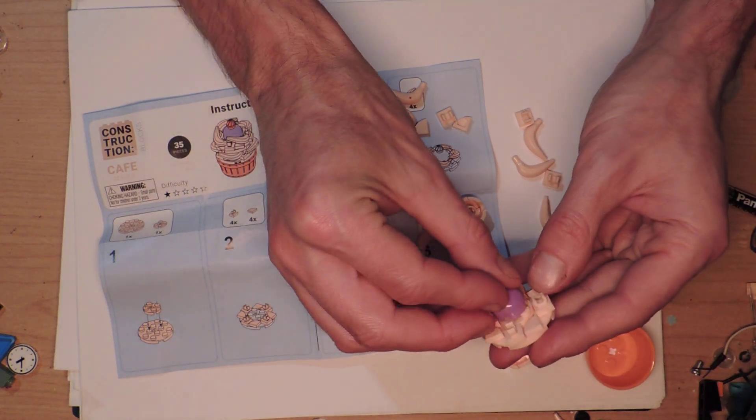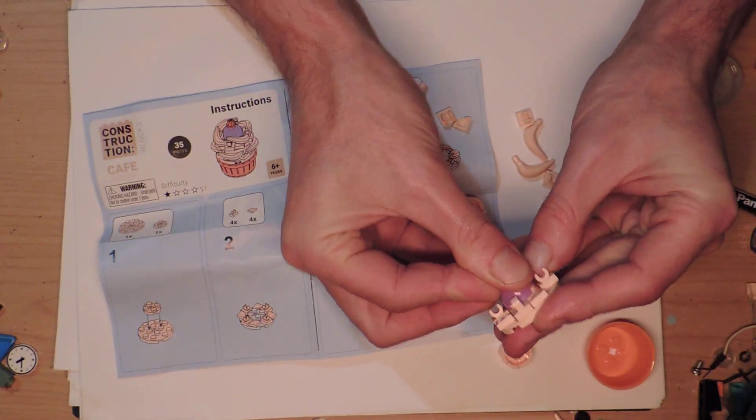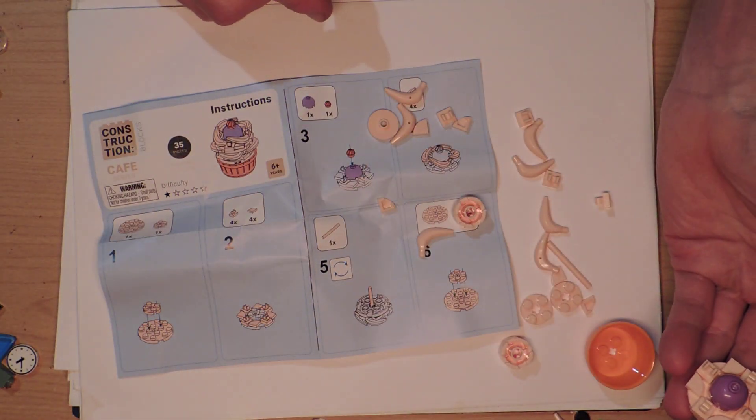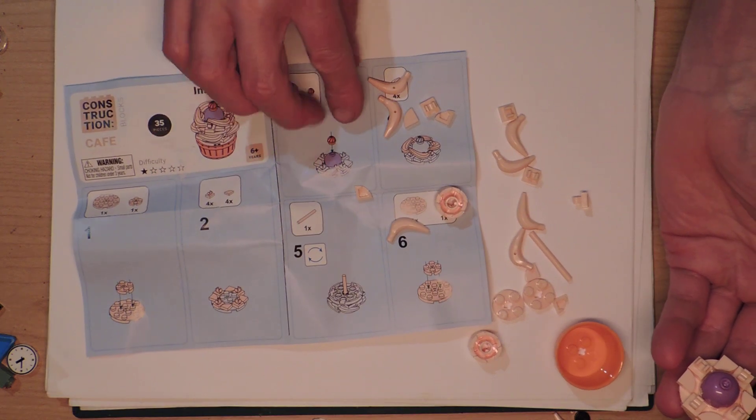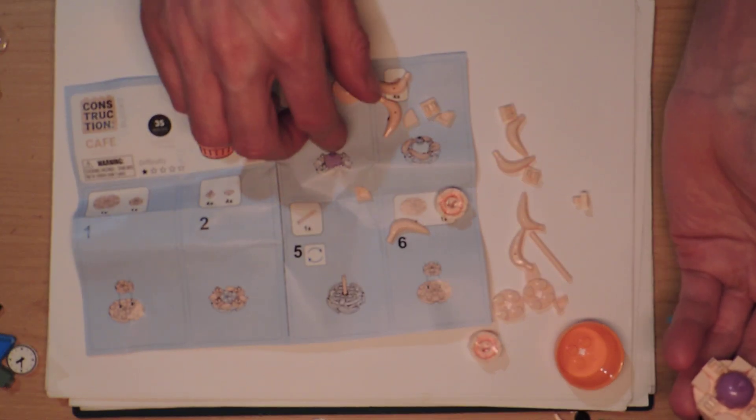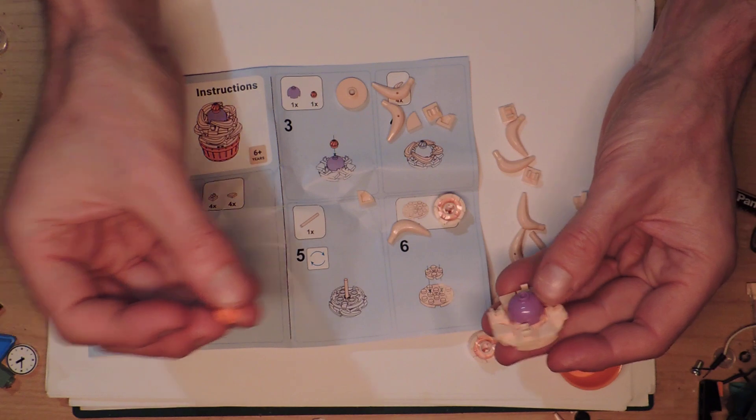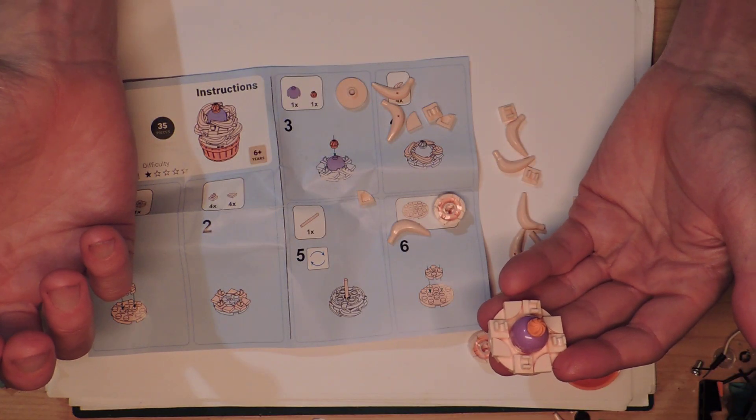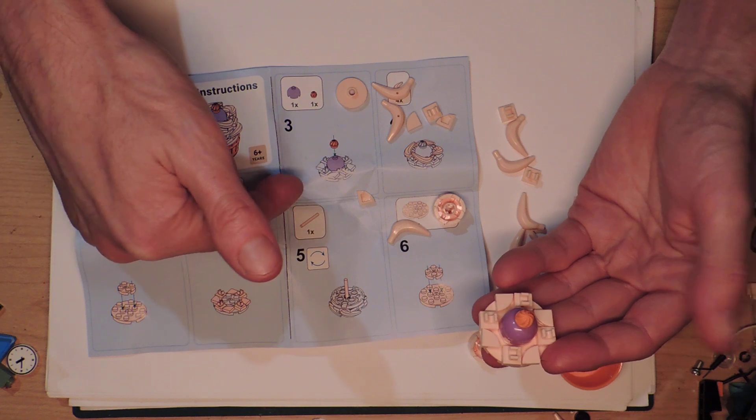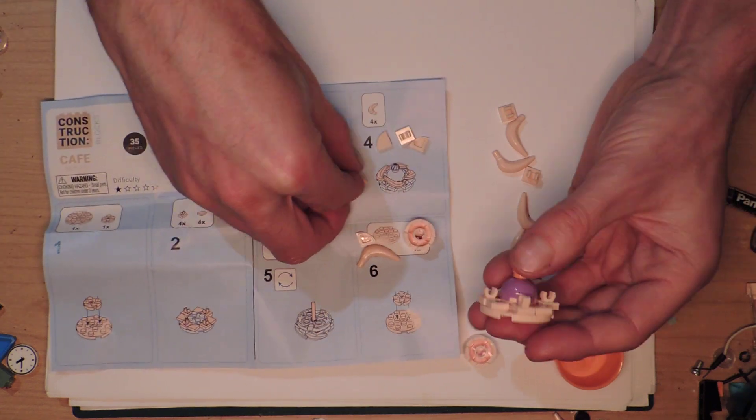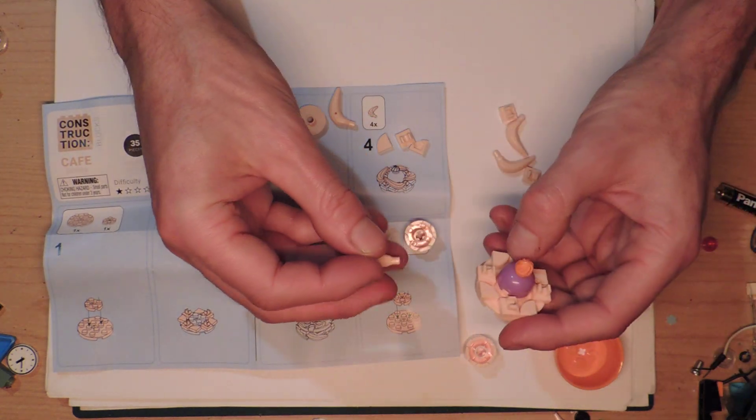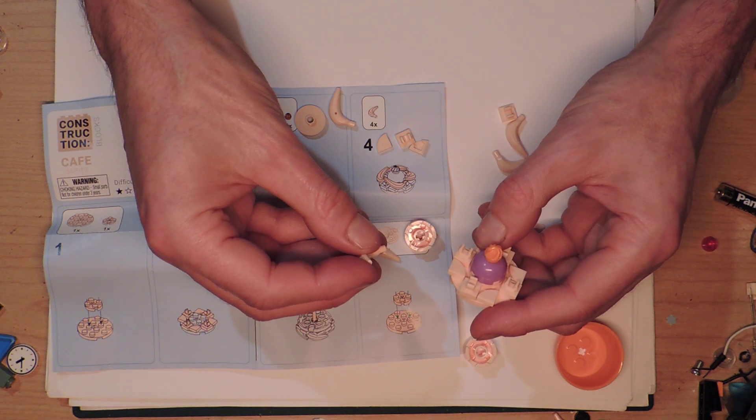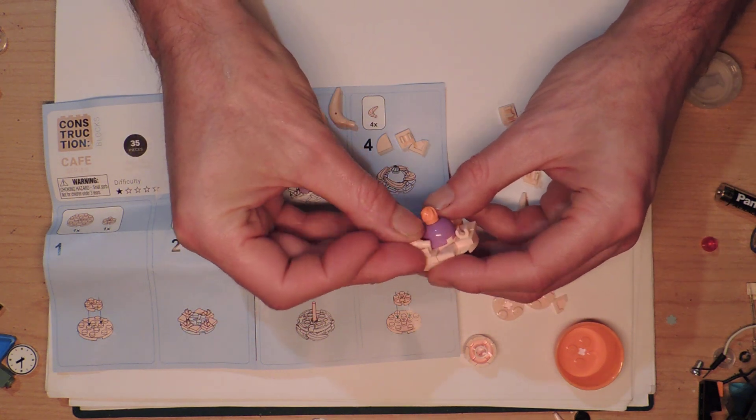So now this purple piece is going to go in the middle, because where else would it go? There's a cupcake - here's my cupcake. Okay, so that's that.